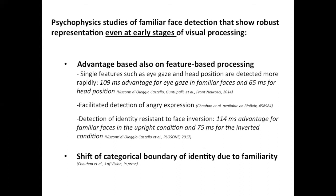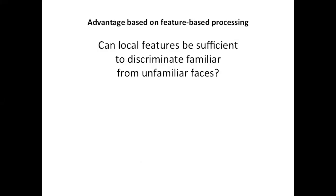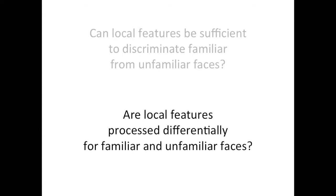I'm going to spend a couple more minutes on two psychophysics studies because they were quite thought-provoking for us, even if the paradigm was straightforward. The data we collected were really shaping our thinking about what might be the mechanism of optimized processing of personally familiar faces. The first experiment was motivated by the question: can local features be sufficient to discriminate familiar from unfamiliar faces, and are local features processed differentially for familiar versus unfamiliar faces?